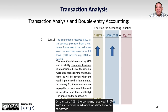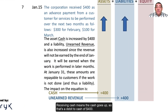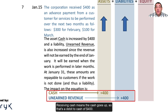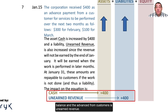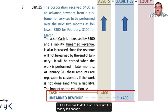On January 15th, the company received $400 from a customer in advance of services to be performed. Receiving cash means cash goes up, so that's a debit to cash of $400. The other part of the entry requires a credit — the advance from customers is unearned revenue. Big Dog will take the customer's money in advance, but it either has to do the work or return the money. That makes unearned revenue a liability, going up with a credit of $400.